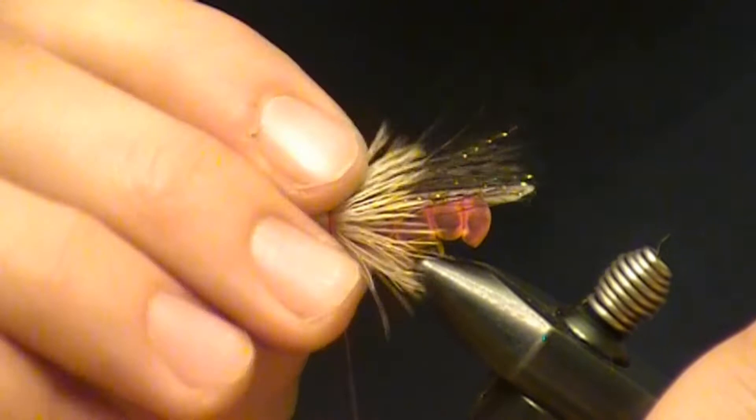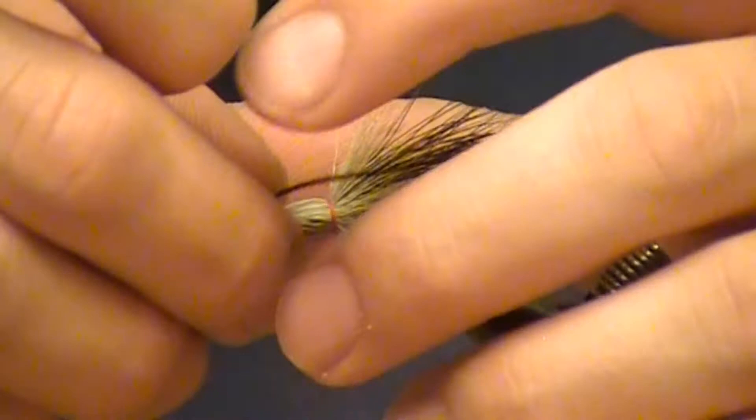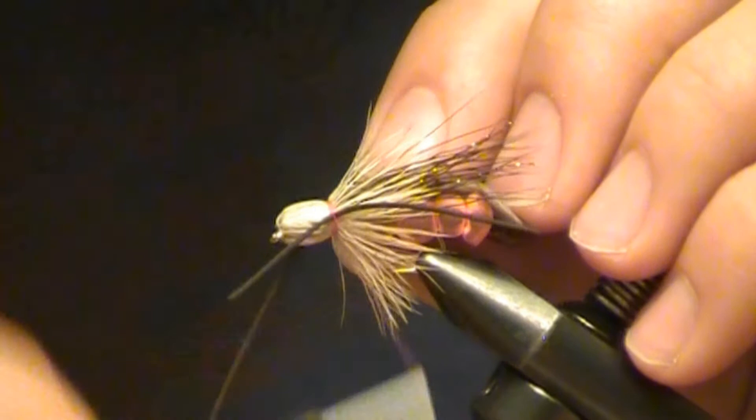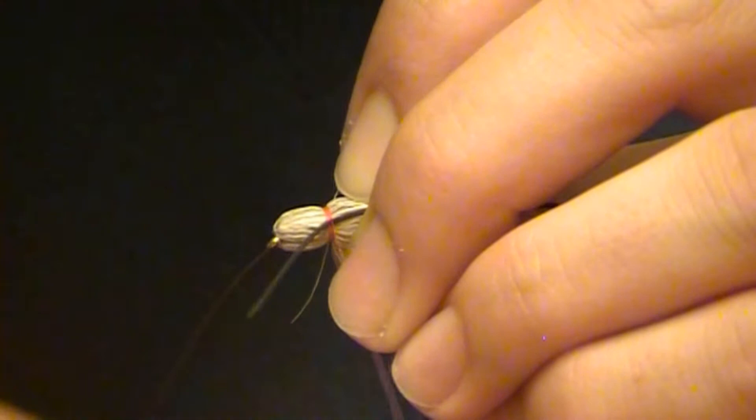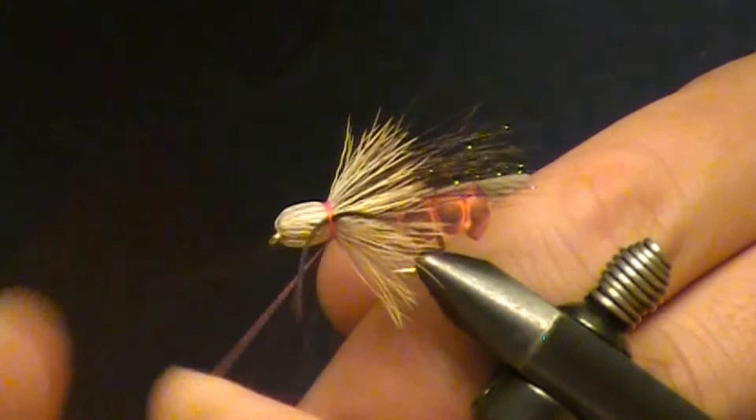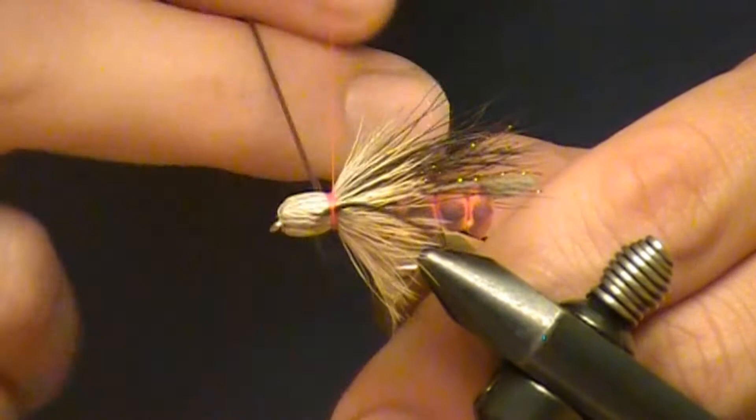And I'm just going to take some black rubber, medium, tie one in on either side. And I'm going to make a hand-to-whip finish. Make sure it's good and tight.